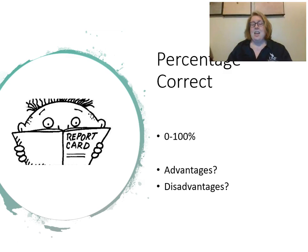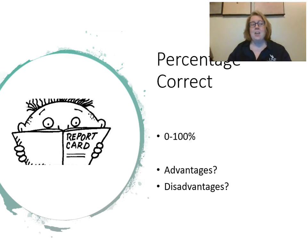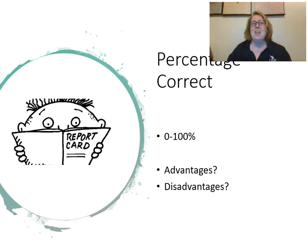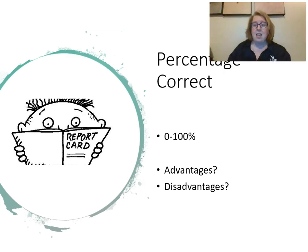With percentage or number grades — a 0 to 100 scale — the advantage is that it's a little more exact and nuanced. You can make distinctions between a 94 and a 96. But that can also be a disadvantage because it might give a false sense of accuracy. Is there really a meaningful difference between a 94 and a 95? There might not be, especially when we consider error in measurement. These grades are pretty universally understood by parents, teachers, and students.